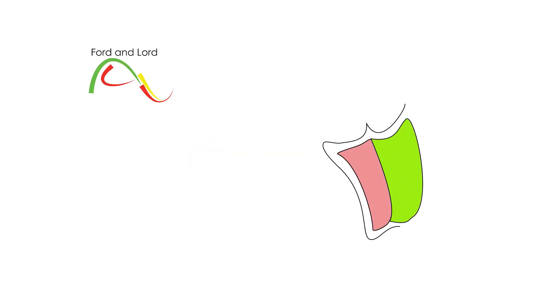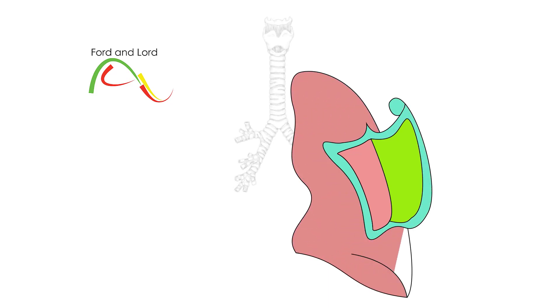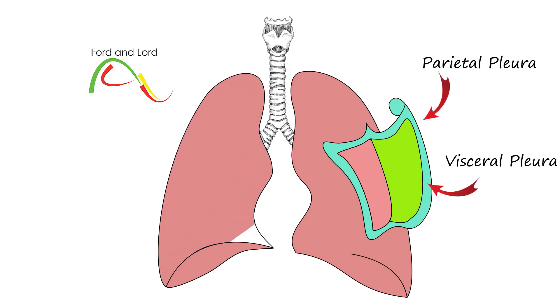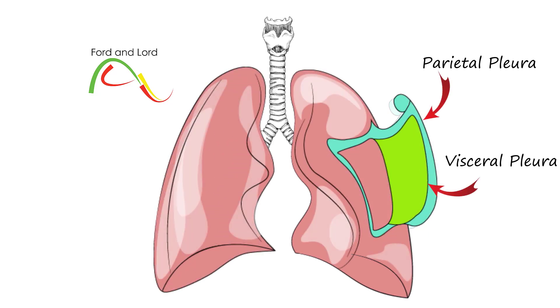In this video we'll discuss the pleura of the lungs. The pleura is a double-layered membrane that covers the lungs. The outer layer is known as the parietal pleura and the inner layer is known as the visceral pleura. Each lung has its own pleura.